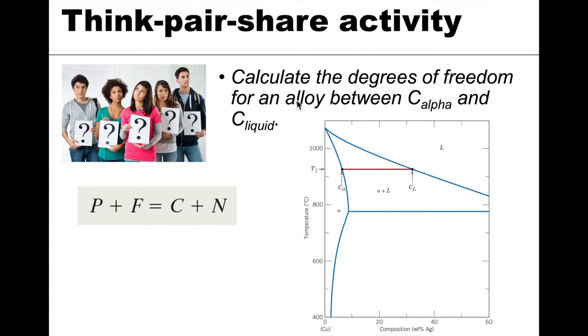So here I want you to calculate the degrees of freedom for an alloy between C_alpha and C_liquid. That's what the diagram is showing here. Look at the phase diagram and using some composition between C_alpha and C_liquid, see if you can determine the degrees of freedom just like we did with the one component system. So do that, come back, and we will see what you get.